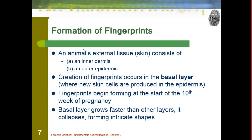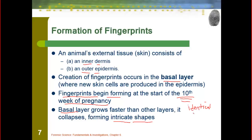When our fingerprints were actually formed, animal tissue has an inner and an outer layer — our dermis and our epidermis. When our fingerprints were first starting to be created, that basal layer — where new skin cells are being produced in the dermis — fingerprints form at about the beginning of the tenth week of pregnancy, so way before you're born. It's caused by that basal layer growing faster than the other layers, and as they form faster, the layers kind of collapse upon each other, forming these intricate shapes. Since they're formed at about the tenth week of pregnancy, even identical twins have different fingerprints, making it an even more unique way to identify individuals.